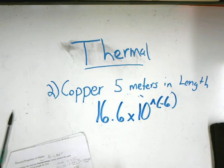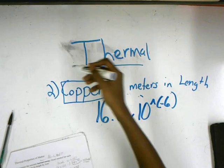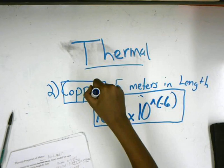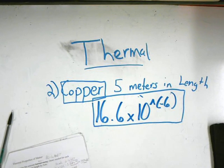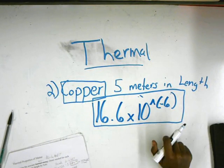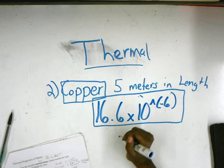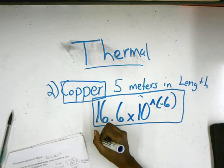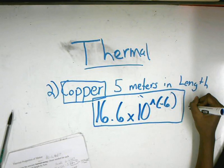Also, it gives you that copper is five meters in length, and you need to know what copper is, which is 16.6 times 10 to the negative 6. This answer, and then you have to count the length by five centimeters, which is increasing. So, you would take this, divided by 0.05.